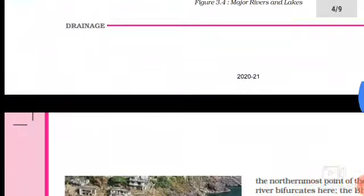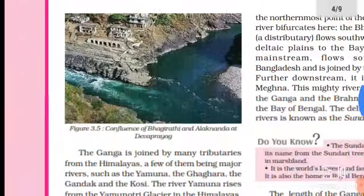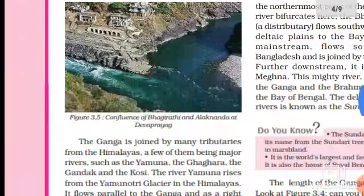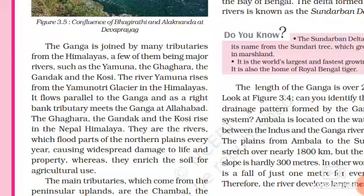We are talking about the Ganga river system. Ganga is joined by many tributaries from the Himalayas. A few of them are major rivers, such as Yamuna. Ganga has many tributaries joining it. The major ones are Yamuna, Ghagra, Gandak, and Kosi.